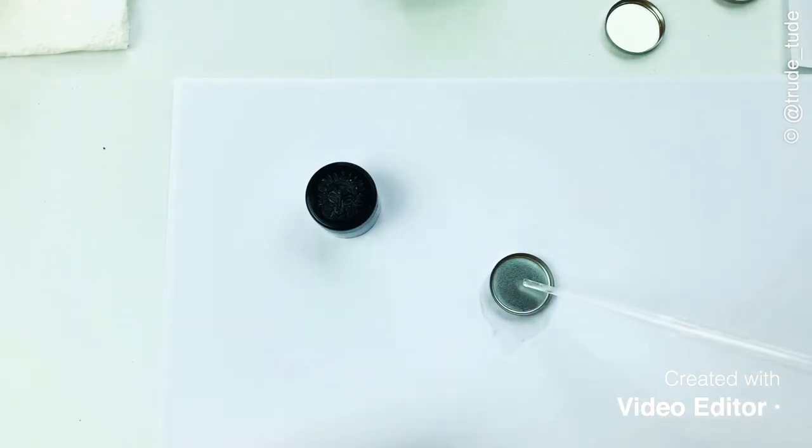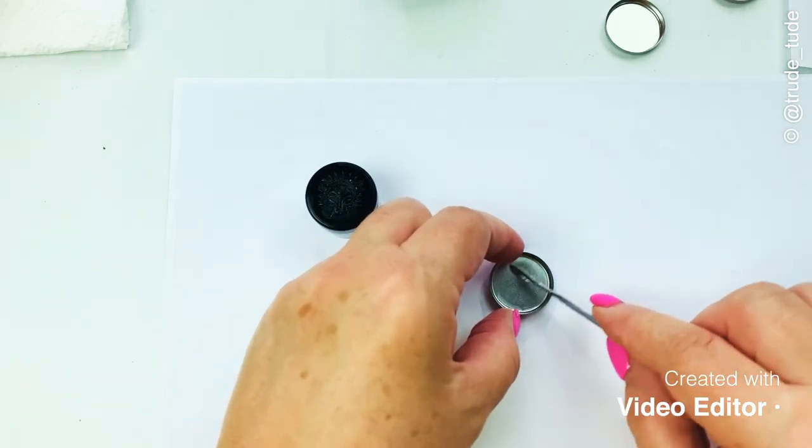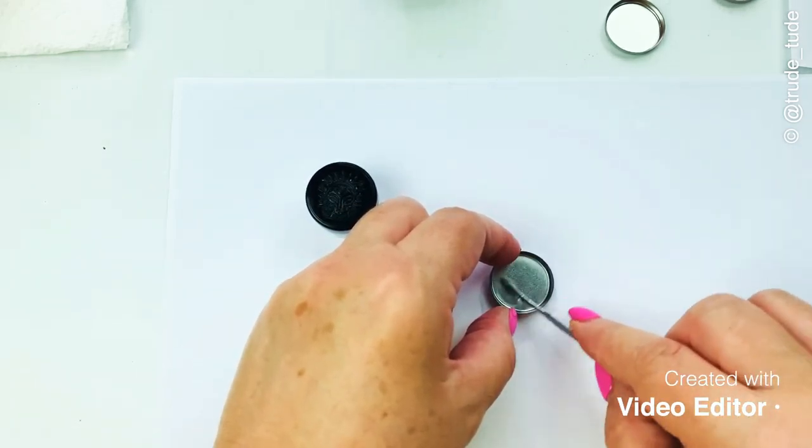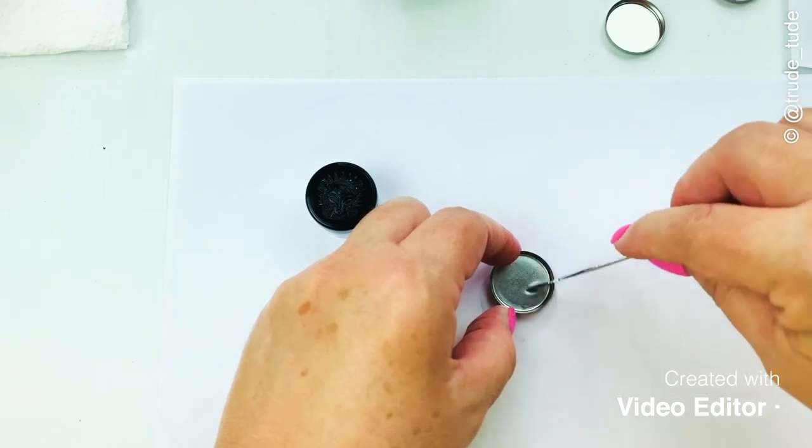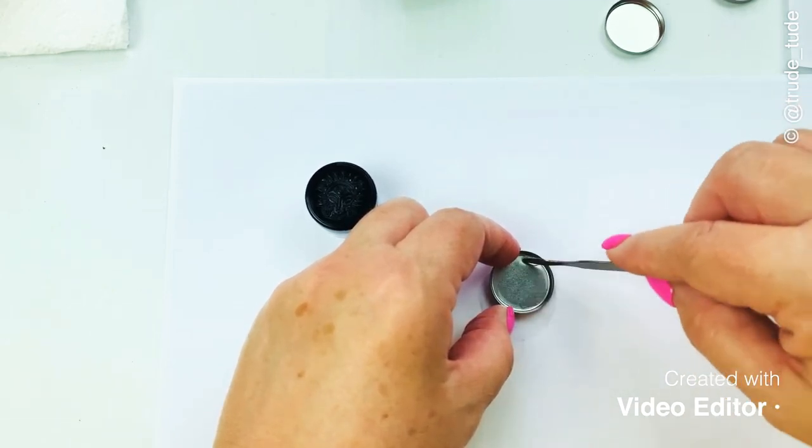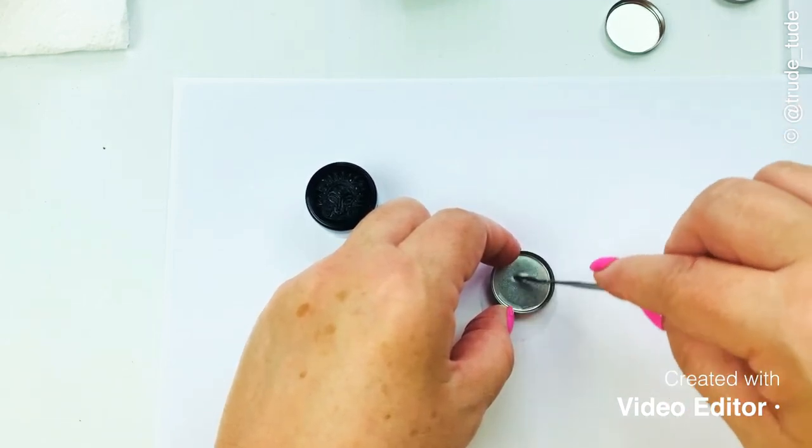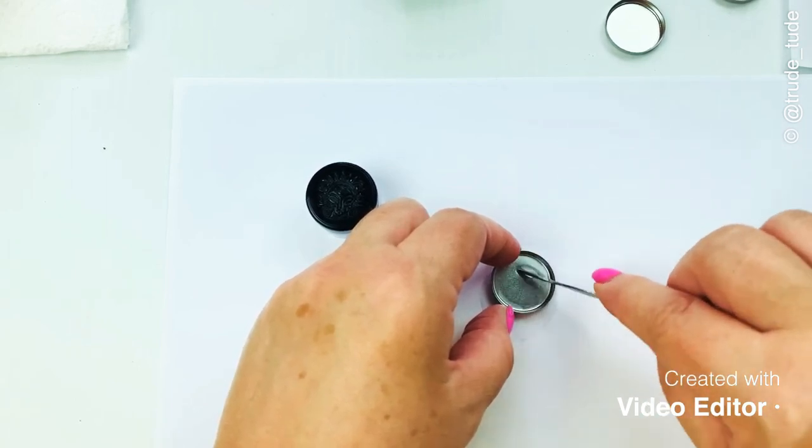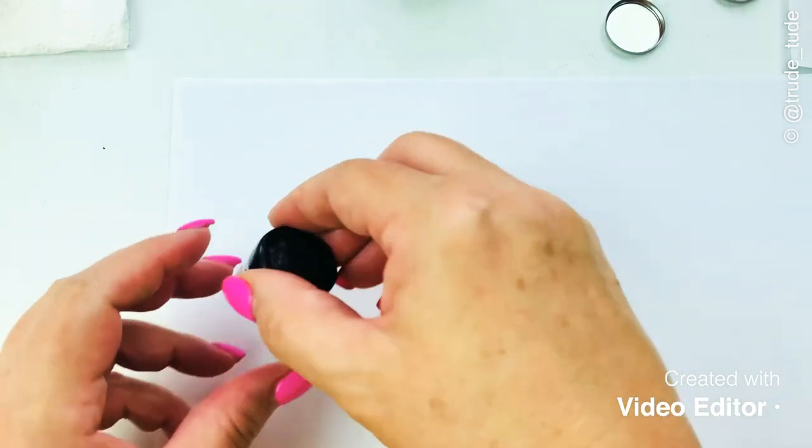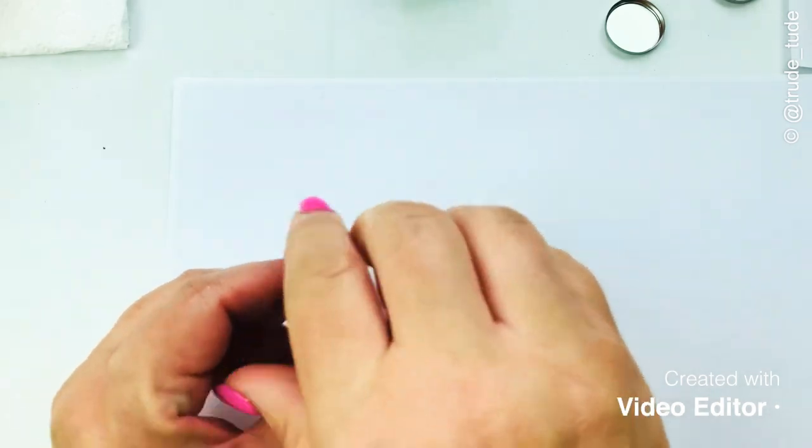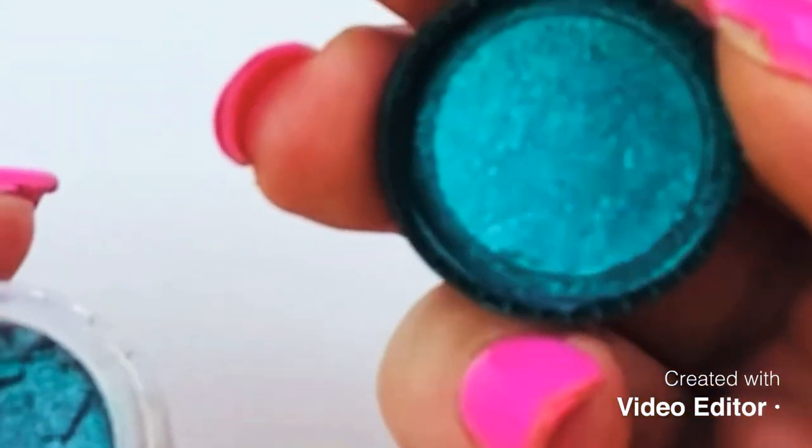So a bit more alcohol before the pigment goes in, just to give it a good pool to drop into without it being too runny. In my experience, if it's too runny they tend to be a bit more crumbly in the pan. All right, the pigment, one of the chromatics.